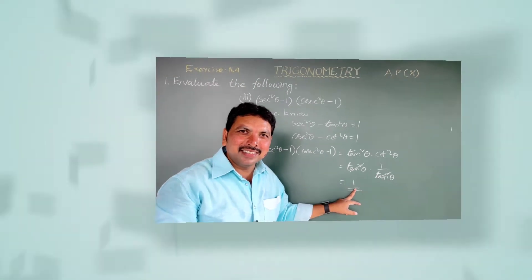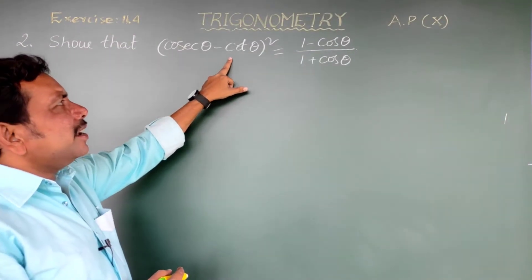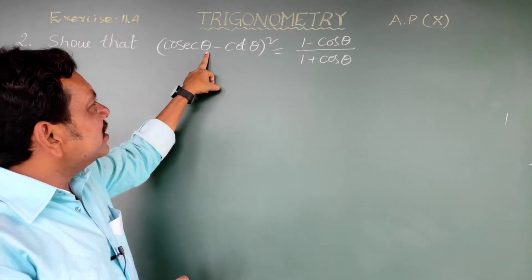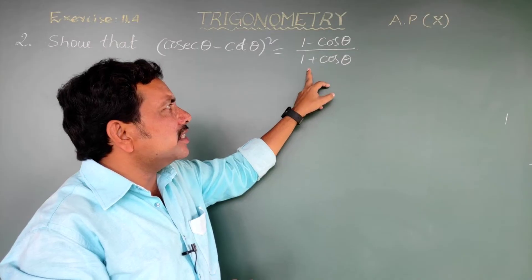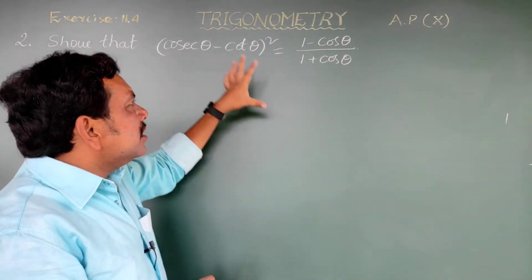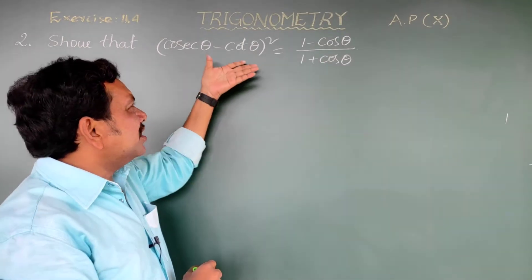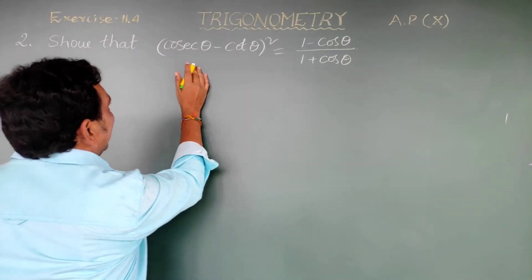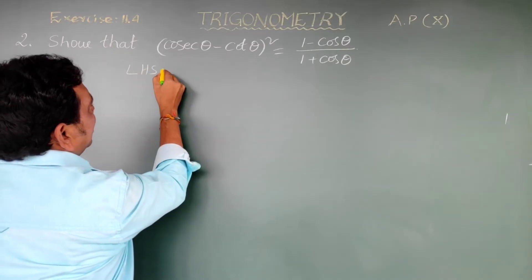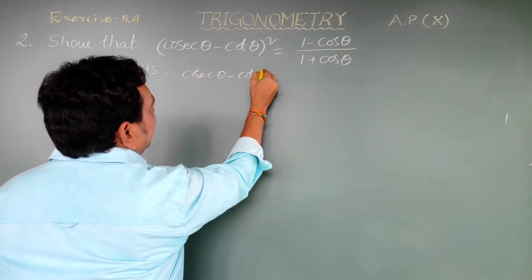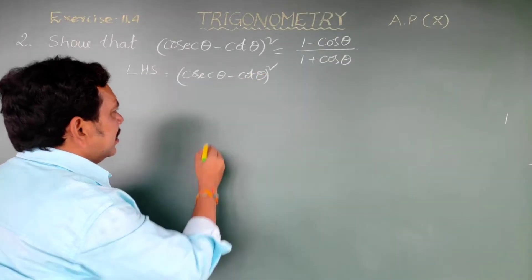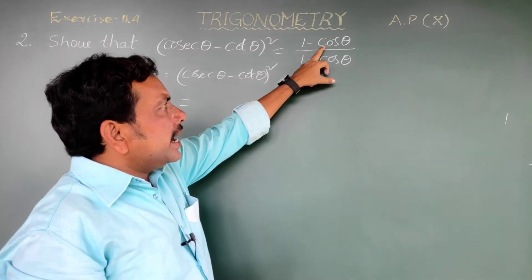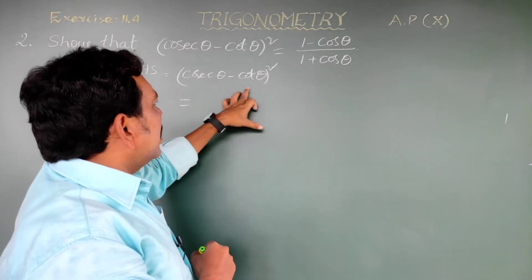Next question: show that (cosec theta - cot theta)² equals (1 - cos theta)/(1 + cos theta). In this sum, we take the LHS and show it equals the RHS. The LHS is (cosec theta - cot theta)². We write this in terms of sine and cos.